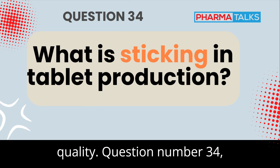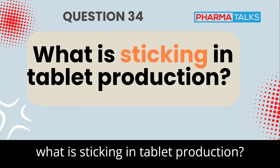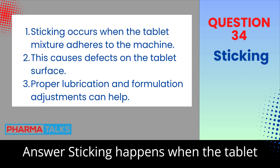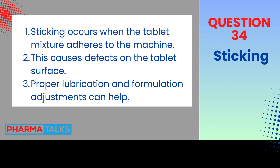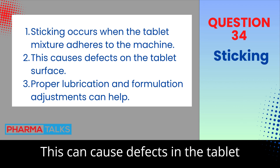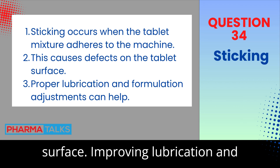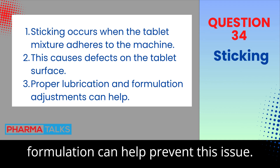Question 34: What is sticking in tablet production? Sticking happens when the tablet mixture adheres to the machine tooling, causing defects in the tablet surface. Improving lubrication and formulation can help prevent this issue.